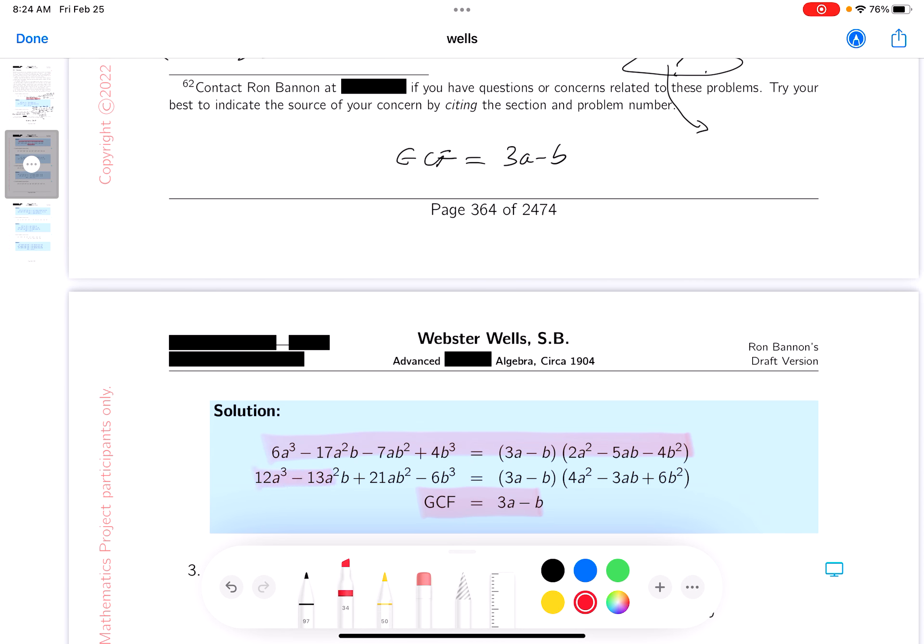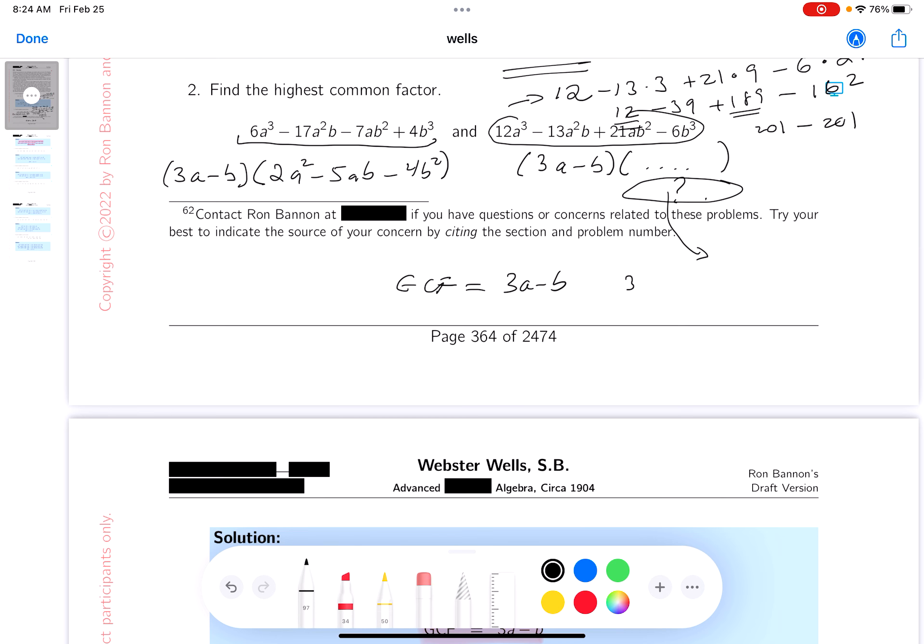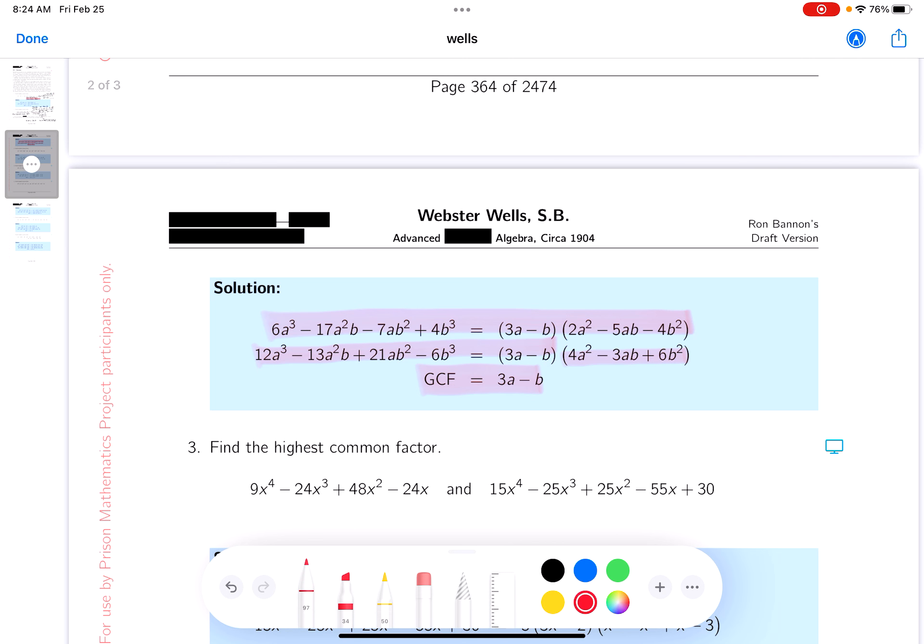Now someone says, well you did it, why don't I do it too? You probably should. You probably should get this thing by long division. What I mean by that: you take this 3a minus b and divide it into the 12a³ minus 13a²b plus 21ab² minus 6b³ and make sure you get what we say you're going to get, which is this thing over here. Make sure that's not highlighting that you get this thing.